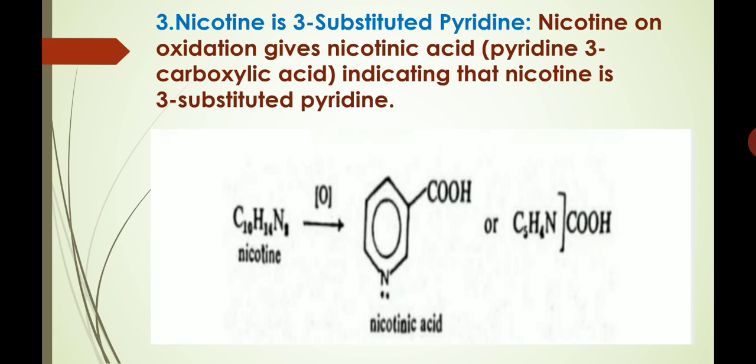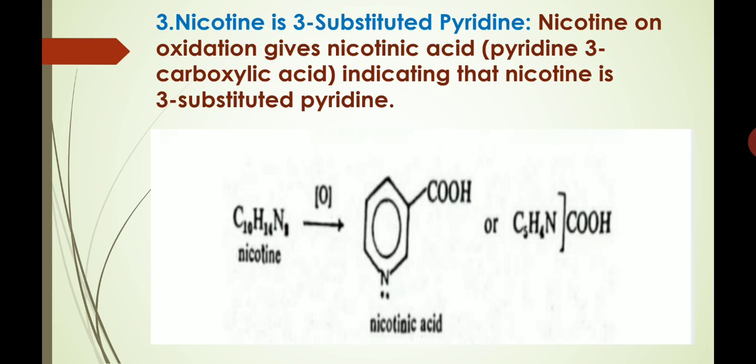The third point is to prove that nicotine is a 3-substituted pyridine. Nicotine on oxidation gives nicotinic acid, which is pyridine-3-carboxylic acid, indicating that nicotine is a 3-substituted pyridine, as we can see in this reaction. By subtracting the molecular formula of a substituted pyridine, C₅H₄N, from the molecular formula of nicotine, C₁₀H₁₄N₂, it is obvious that the side chain at position three is C₅H₁₀N. So the formula of nicotine may be written as indicated in this figure.